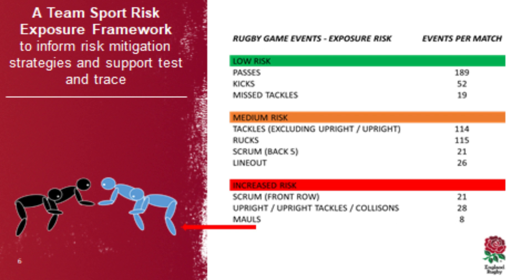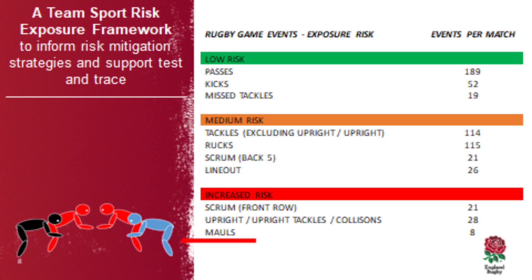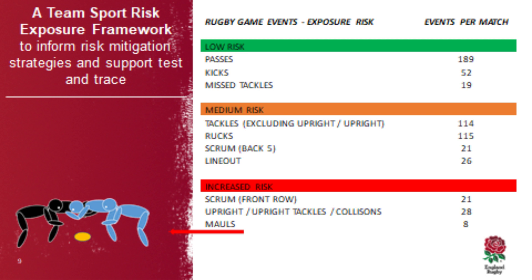We've done analysis to work out how many different game events occur in the community game, and we've characterized these using the framework I've just explained into low risk, medium risk, and increased risk events. Looking at the increased risk events, on average we see 21 scrums that occur per game. We can see that in the setup to the scrum the front rows are face-to-face, creating an opportunity for transmission, and once into the scrummaging position there is the concern around the micro-environment of low ventilation.